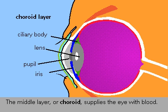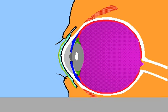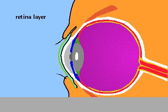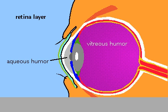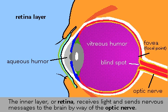The middle layer or choroid layer supplies the eye with blood. The inner layer or retina receives the light image, converting it into impulses that are sent through the optic nerve to the brain.